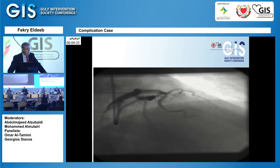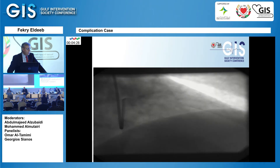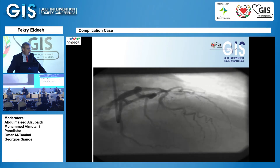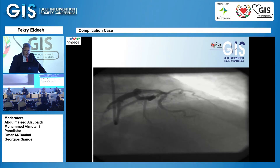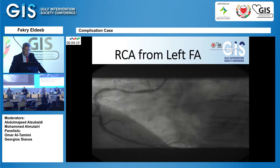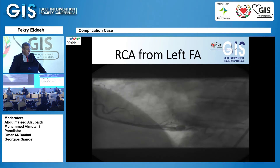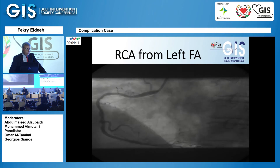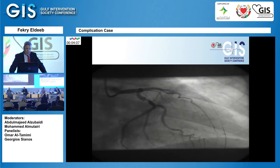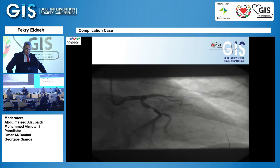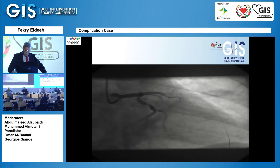I thought: maybe if I go back and do the right coronary artery, I can see some retrograde collaterals that can help me redirect the wire into the true lumen. I did that — I took a long shot of the right coronary artery and was very patient waiting to see the retrograde collaterals. Fortunately, this was helpful.